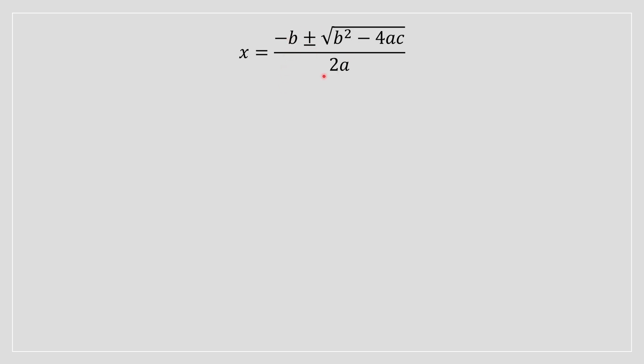Right lads, so today we're going to try to derive the quadratic formula. The first step is to write the general equation of a parabolic function, which is given as ax squared plus bx plus c equals 0.